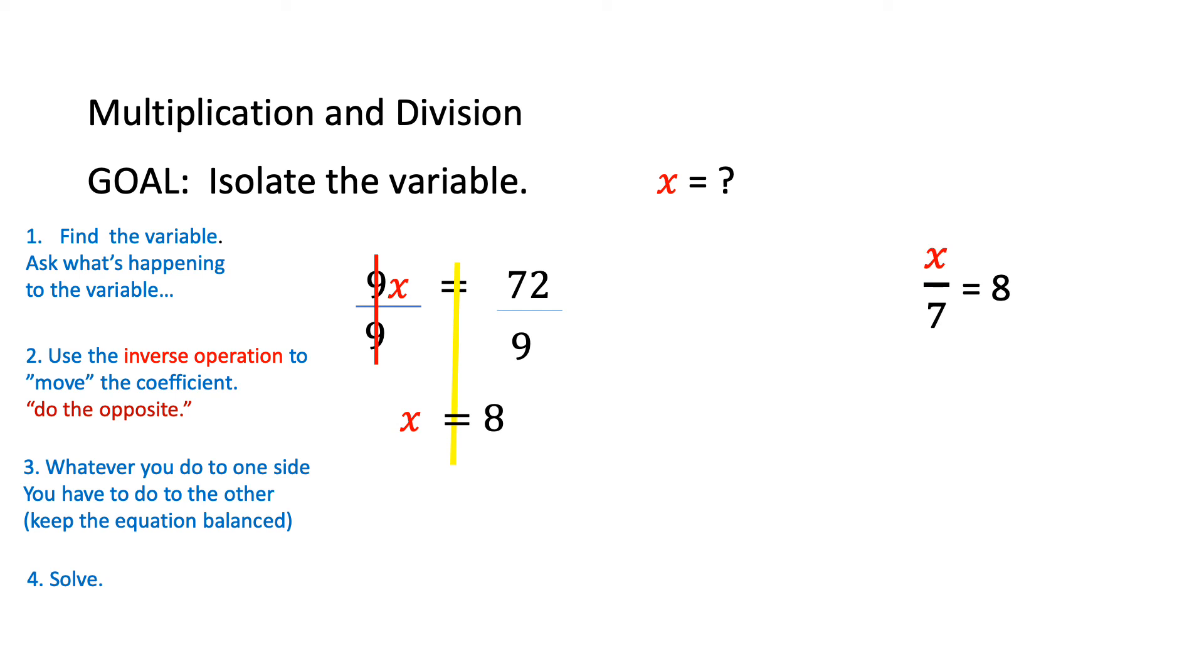Here we have x divided by 7 equals 8. Draw a line through your equal sign and work on the side with the variable. Since x is being divided by 7, we're going to do the opposite and multiply by 7 on both sides. Notice that we can cross-reduce or cancel out the 7s. 7 divided by 7 is 1, so now we're left with x equals 56. If we substitute our values back into our original problem, we can check our answer.